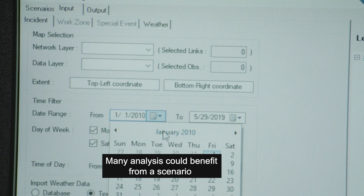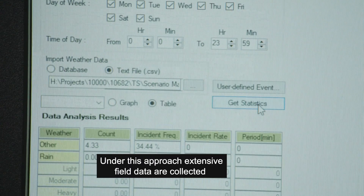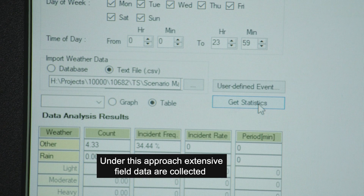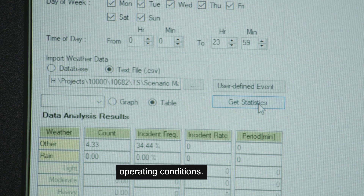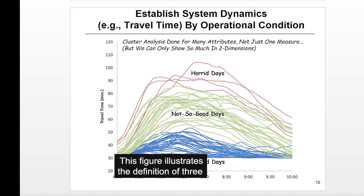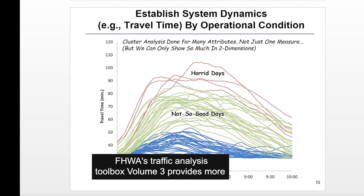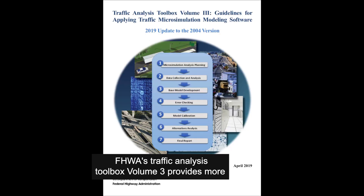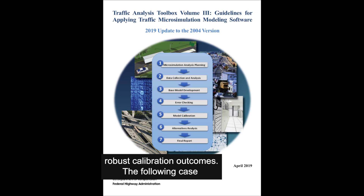Many analyses could benefit from a scenario-based calibration. Under this approach, extensive field data are collected in order to identify the effects of varying operating conditions. This figure illustrates the definition of three scenarios to capture these variability effects. FHWA's Traffic Analysis Toolbox Volume 3 provides more detail on the cluster analysis procedure, which can produce robust calibration outcomes.